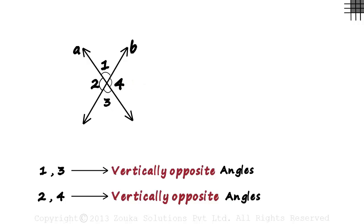Well, it looks as if Angles 1 and 3 are vertical while Angles 2 and 4 are horizontal. But in any case, such pairs of angles are always called vertically opposite angles.